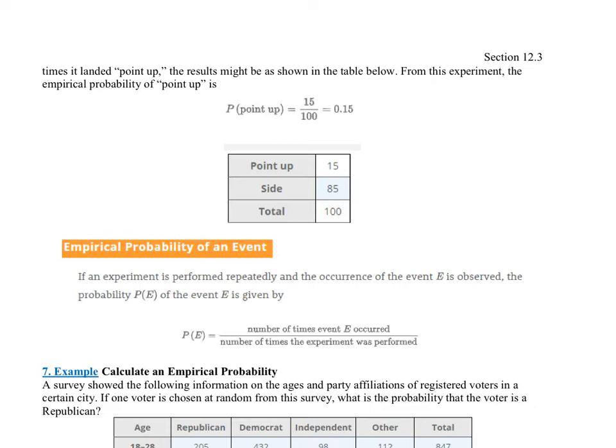Imagine if you flipped a thumbtack 100 times and counted how many times it landed point up or how many times it landed on its side. The results might be shown in the following table. When you look at this table, out of the 100 times that you threw it, it landed point up 15 times and it landed on its side 85 times.